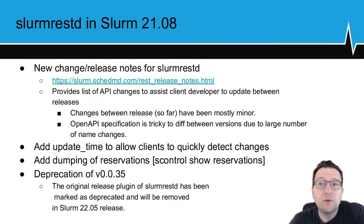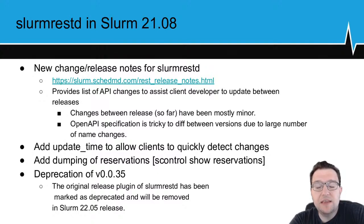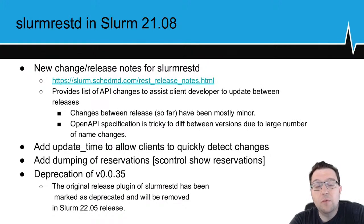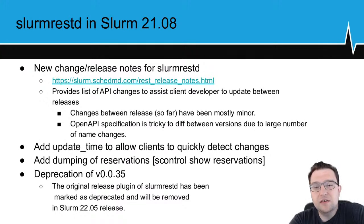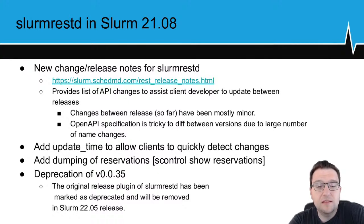Now for the changes in Slurm 21.08. As we make changes to the REST API, it's harder for client developers to keep track of what's changed — doing a JSON diff isn't nearly as useful. So we've made a release notes page that details what sections have changed inside the OpenAPI specification we provide. Sites can just look at what changed and update the client accordingly. We'll maintain this page and it includes all previous changes from the initial release.